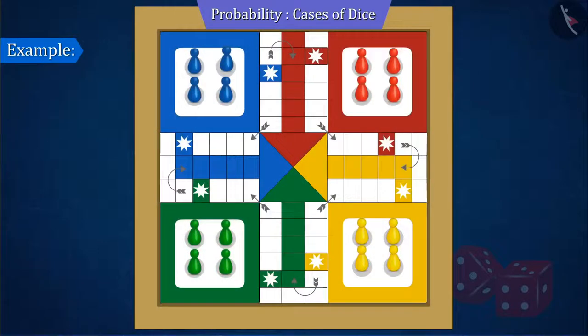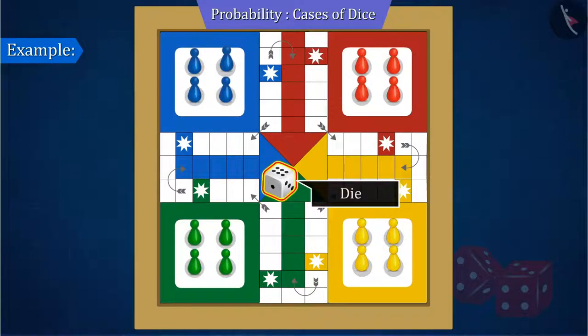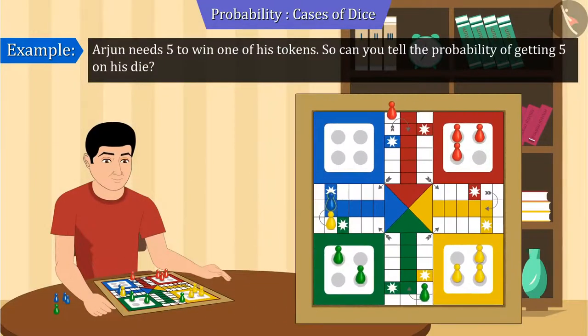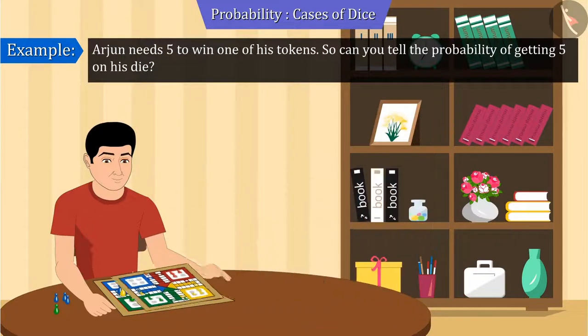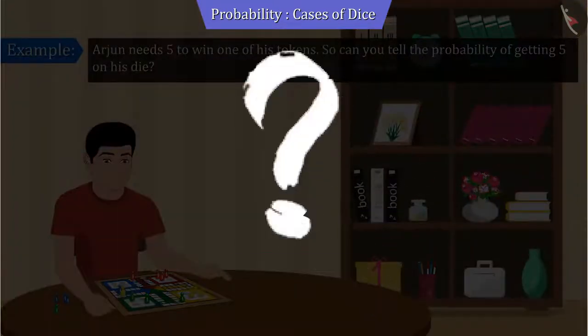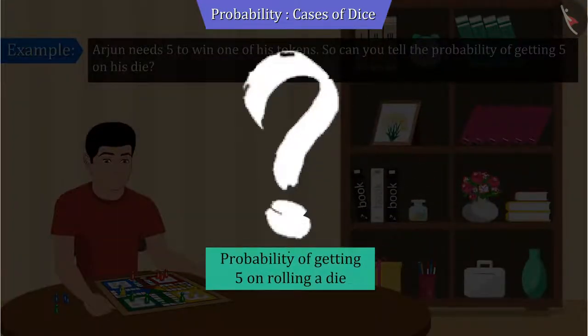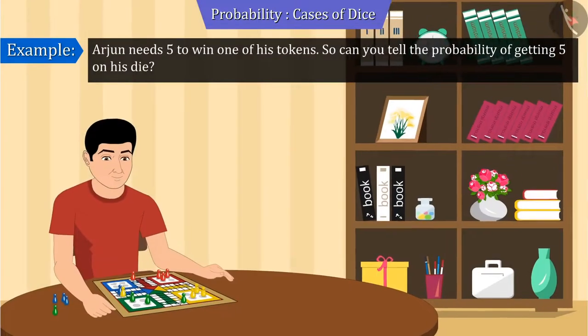All of you recognize die which are used in the game of Ludo. Look here, Arjun needs 5 to win one of his tokens. So can you tell the probability of getting 5 on the die? Let's now discuss this question.